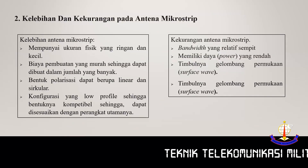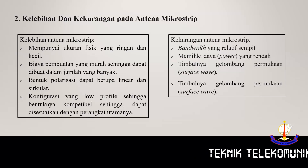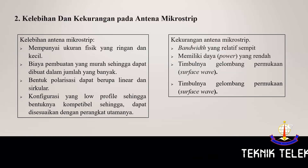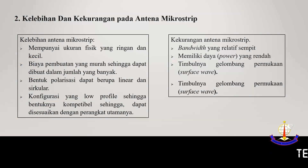Antena microstrip memiliki kelebihan dan kekurangan. Kelebihan antena microstrip adalah: mempunyai ukuran fisik yang ringan dan kecil; biaya pembuatan yang murah sehingga dapat dibuat dalam jumlah yang banyak; bentuk polarisasi dapat berupa linear dan sirkular; konfigurasi yang low profile sehingga bentuknya compatible dan dapat disesuaikan dengan perangkat utamanya. (Microstrip antenna advantages: lightweight and small, cheap to manufacture, linear and circular polarization options, low profile and compatible with host devices.)